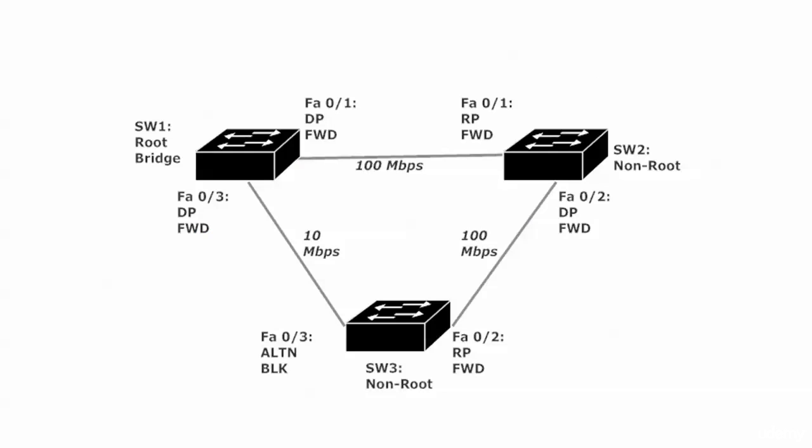That change in speed totally changed the port assignments on switches two and three. Where switch two had port two in blocking mode, it's now forwarding because it is the designated port for the segment connected to switch three. Switch three's fast ethernet two is in forwarding mode as the root port. The one port STP put into blocking mode to prevent switching loops is fast ethernet three on switch three — the directly connected interface.